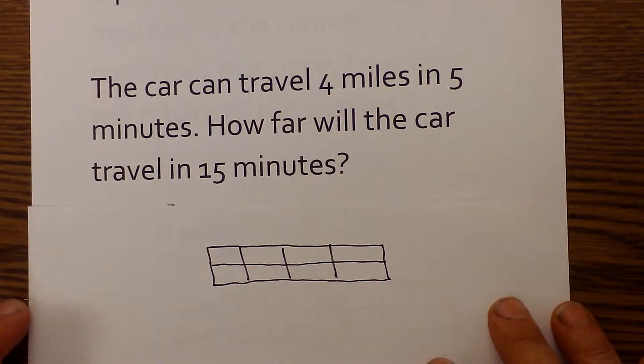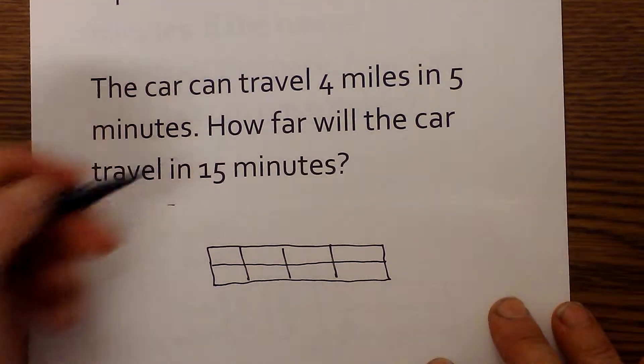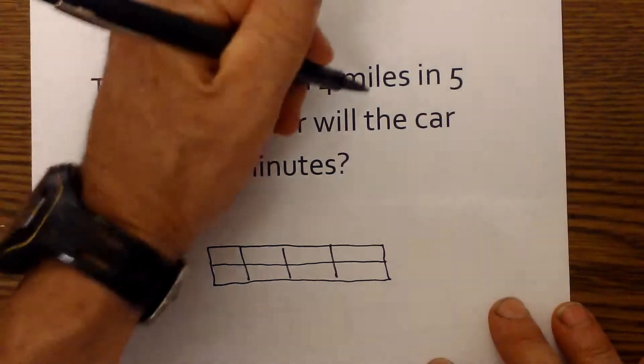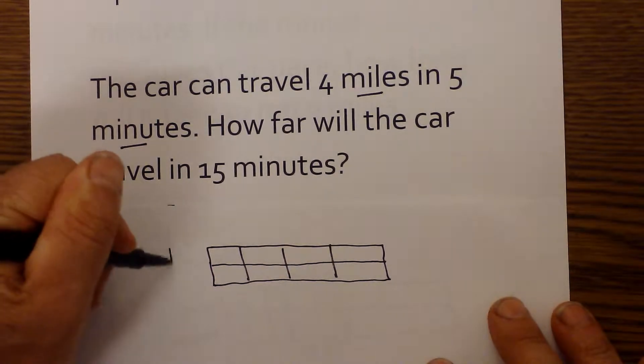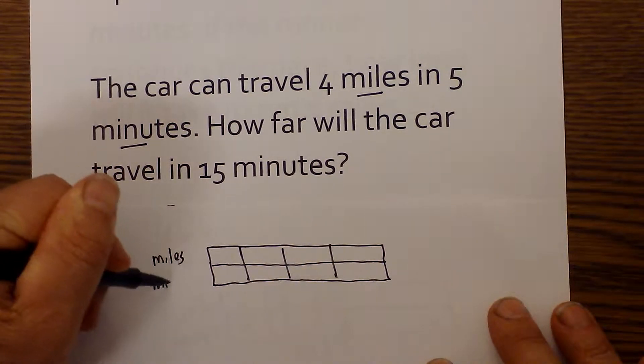So here we go. First thing I do is I determine what information is given and I'm given miles and minutes. So I'm going to label my box. I'm going to label miles on the top, minutes on the bottom.